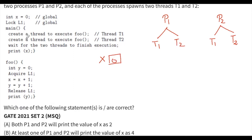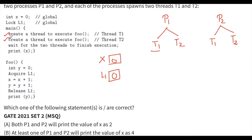There is also a lock variable L1. Since it is a global variable, it is automatically initialized to zero. In the main function, a thread for function foo is called as T1, then a thread for T2 is called. So these two are the function calls - first we execute this function call, then this one, and then there is a wait function.